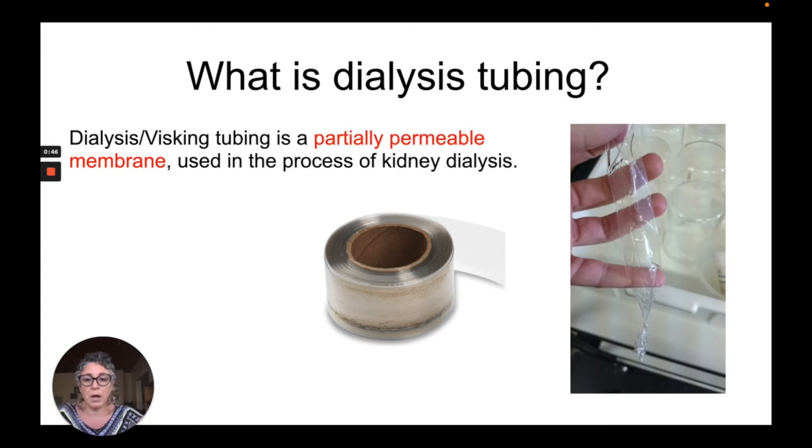So this tubing, otherwise known as viscing tubing, is in fact a partially permeable membrane. It is created for individuals that need to go through kidney dialysis and we'll learn more about kidney dialysis when we study the excretory system. But just for now, what you need to know is that the viscing tubing is material that is partially permeable.